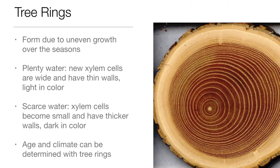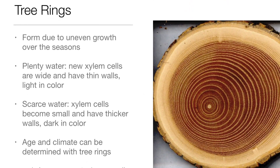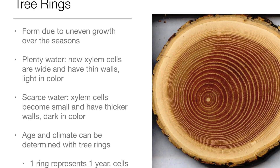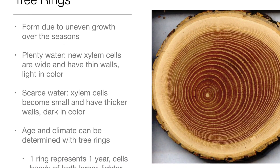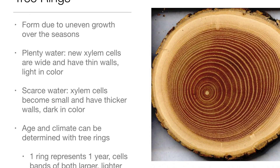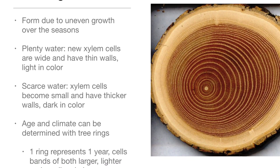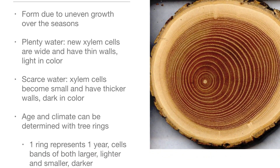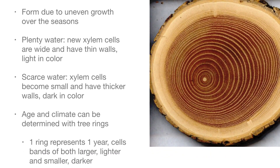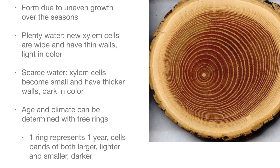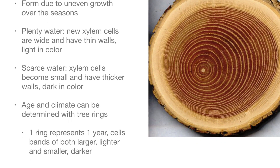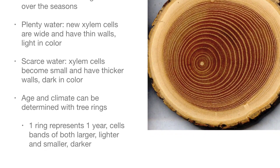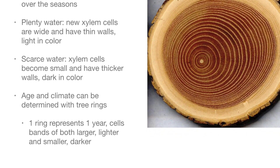Tree rings are formed due to uneven growth over the seasons. With plenty of water, new xylem cells are large and have thin walls, appearing light in color. With scarce water, xylem cells become small and have thicker walls, appearing dark in color. A tree's age and past climate can be determined from its rings, with one ring representing one year. Cell bands alternate between larger and lighter, and smaller and darker.